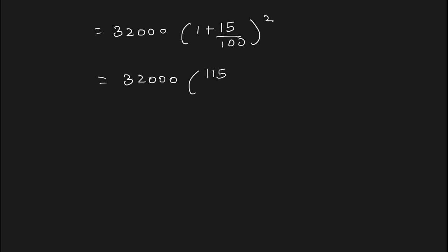Again, 32,000 times 115/100 times 115/100. Now cancel the zeros. After solving this complete equation, we'll be getting the value equal to 42,320.